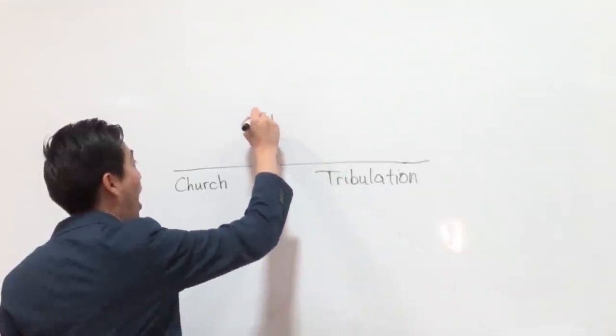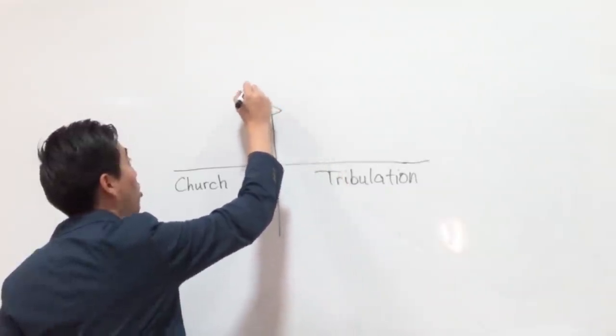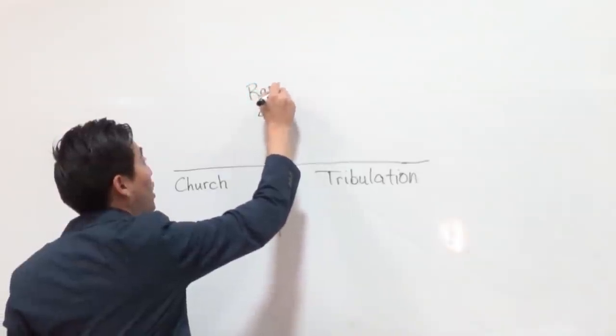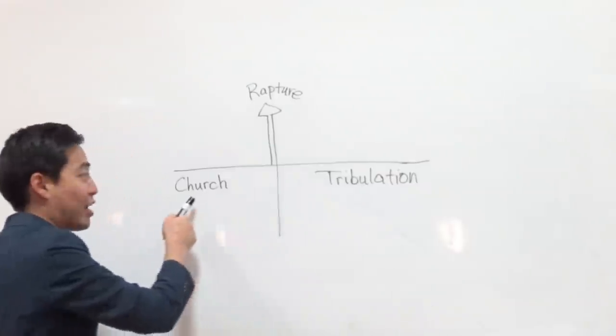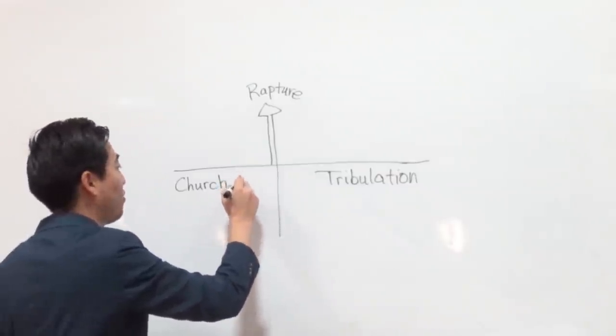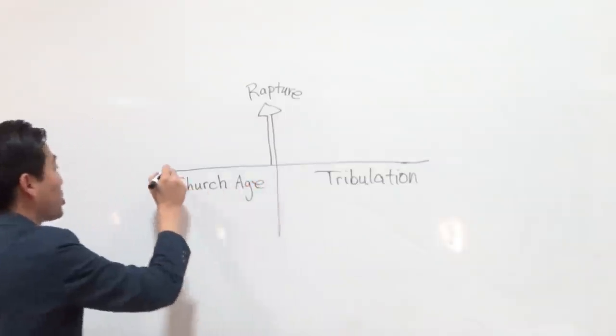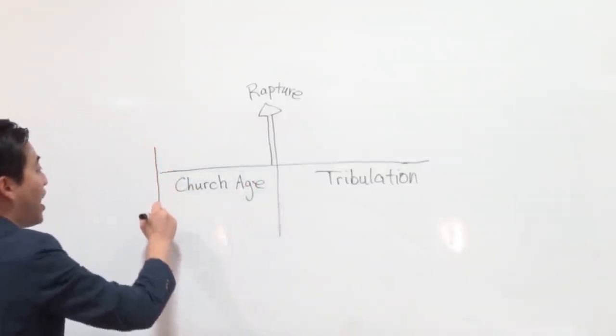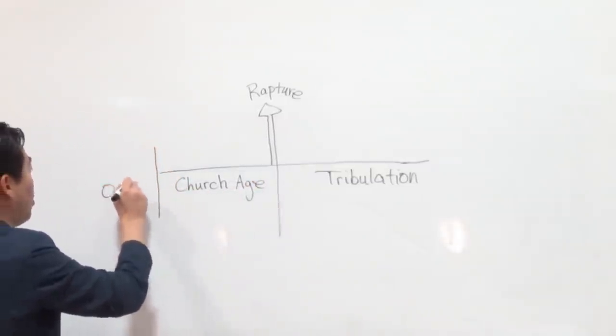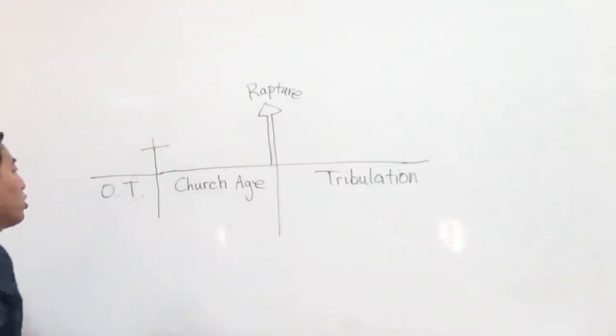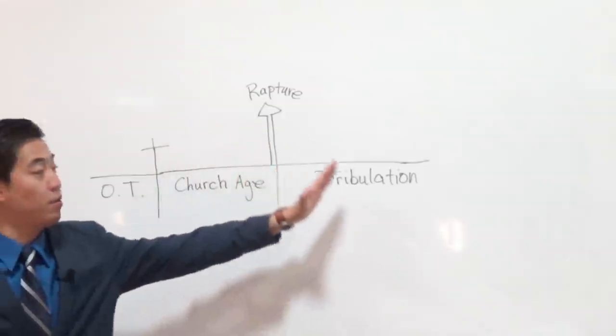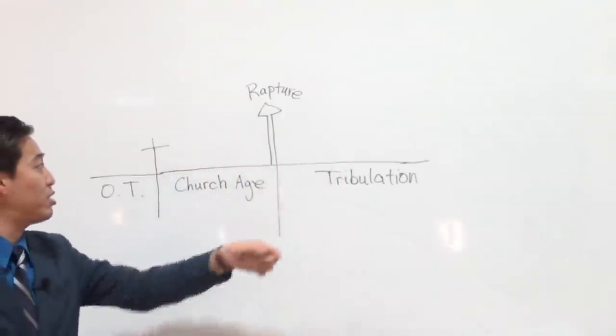The church age time period is different from the tribulation time period. The church will be raptured before the tribulation starts. And the good guys in the tribulation are tribulation saints, not church age saints. Just like there's a difference with the Old Testament as well. Don't put this into the same category.